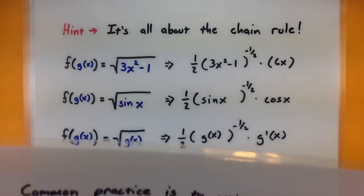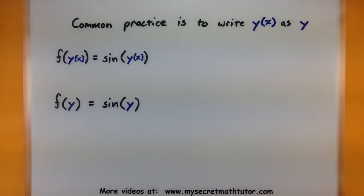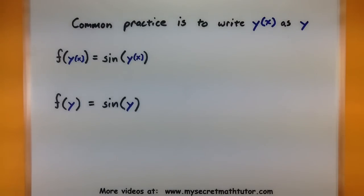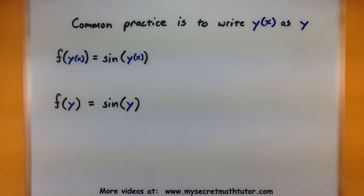What often messes people up with implicit differentiation is that it's common practice to write that inside function y of x as simply just y. But really, there's no difference in writing it as y of x or writing it just as y. So let's do a couple more chain rule problems and practice with this notation.